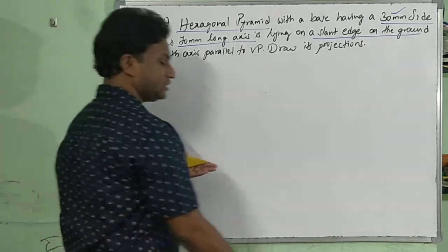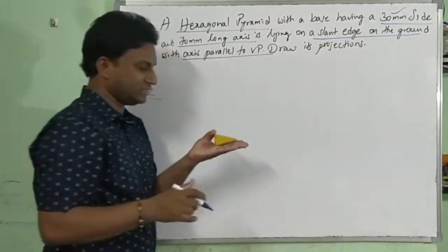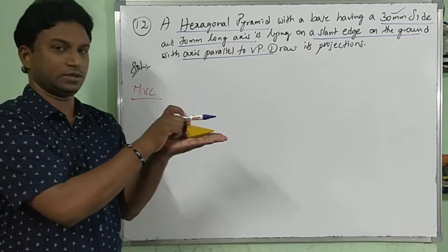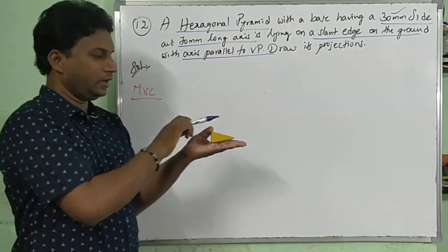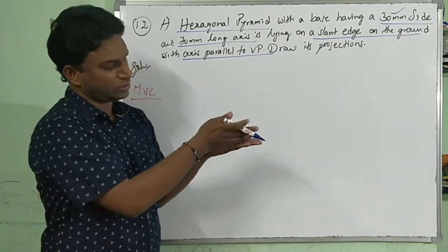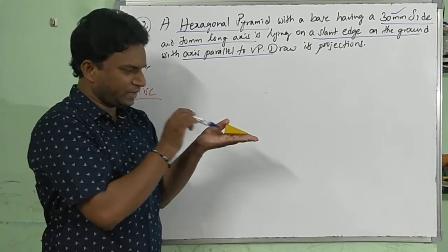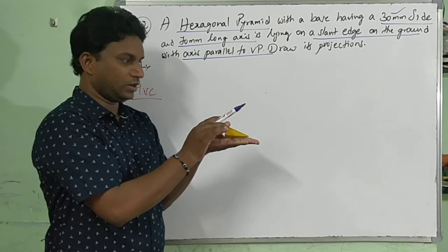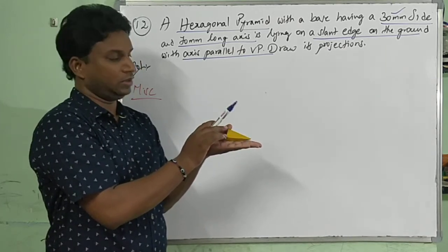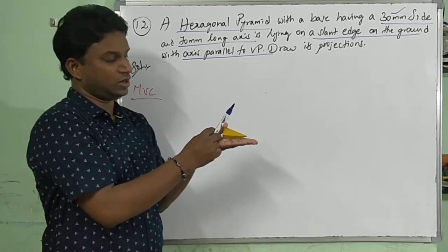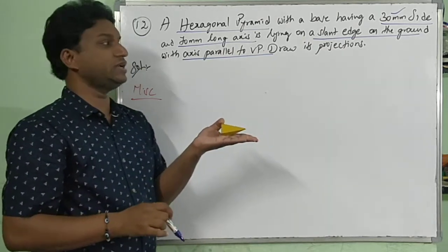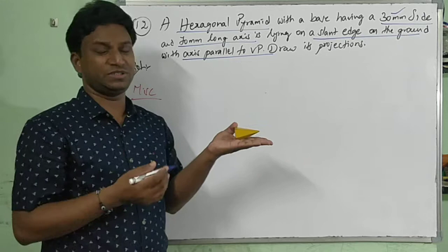One more condition is given: axis parallel to VP. The axis goes from apex to the center of the base. When the pyramid is lying on a slant edge, the axis will be inclined. This is not the regular type we solved before — we have to use the same two-stage process, stage 1 and stage 2. We rotate the object to a position where we can draw the true shape.